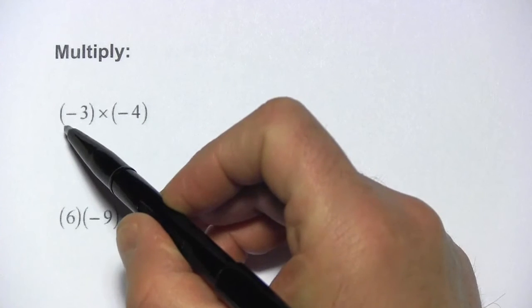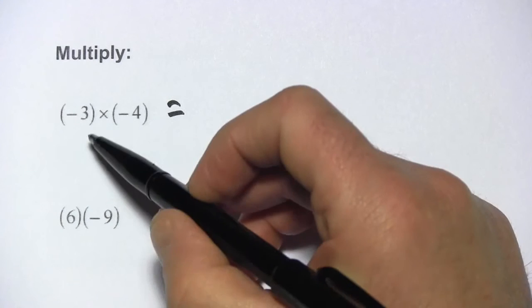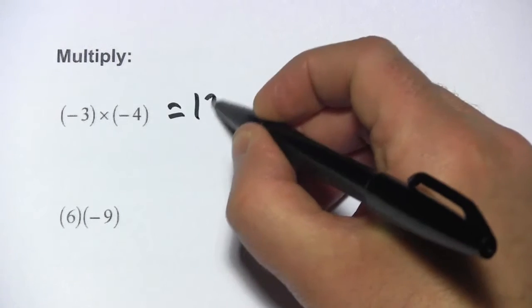So this one, negative 3 times negative 4, that's going to be a positive result. And then it's just 3 times 4, so that's 12.